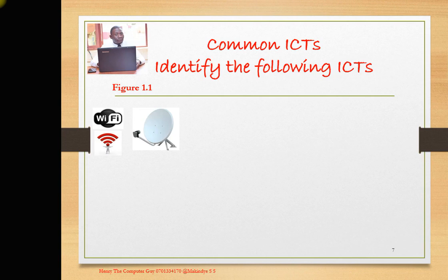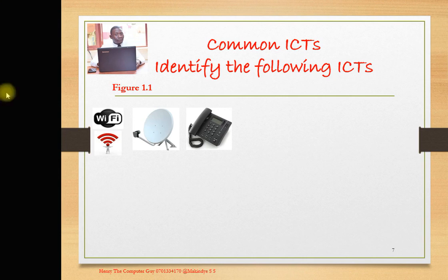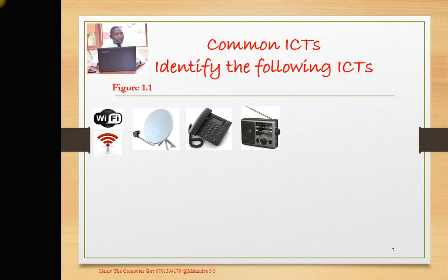Let's say you have your DStv — you have seen that dish outside connected to your TV. Then we have a telephone, which is used for making calls. This is a dish. This is a telephone. This is a radio. What is a radio used for? Broadcasting news. Back down in the village you need to listen to some news — you can put on a radio. It is used to broadcast news, music, and others.